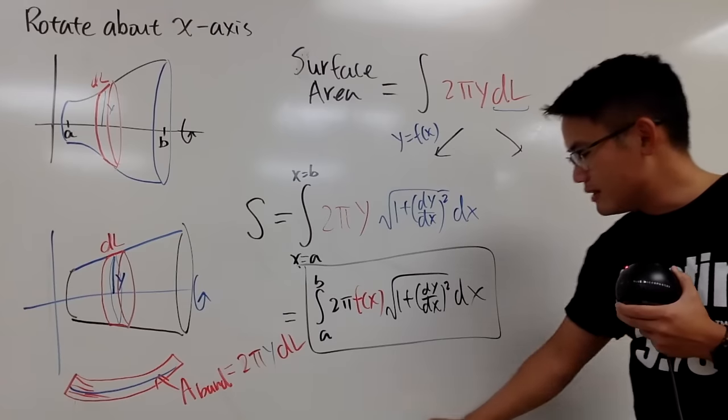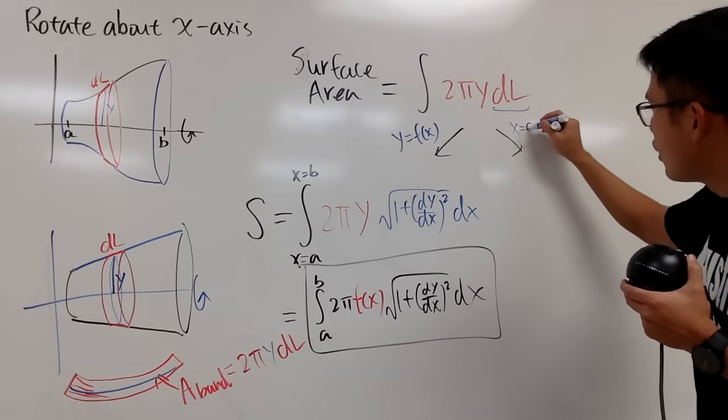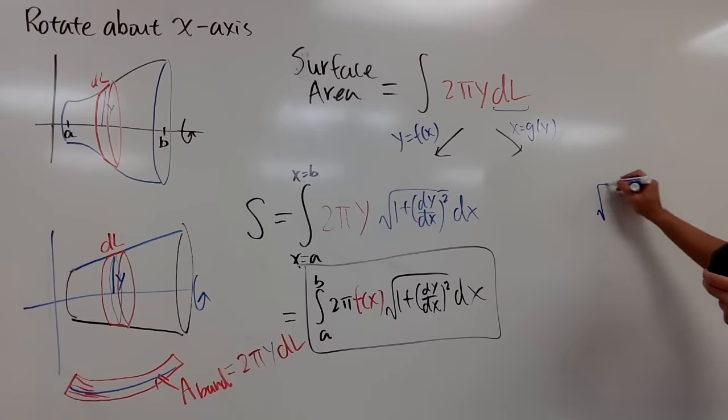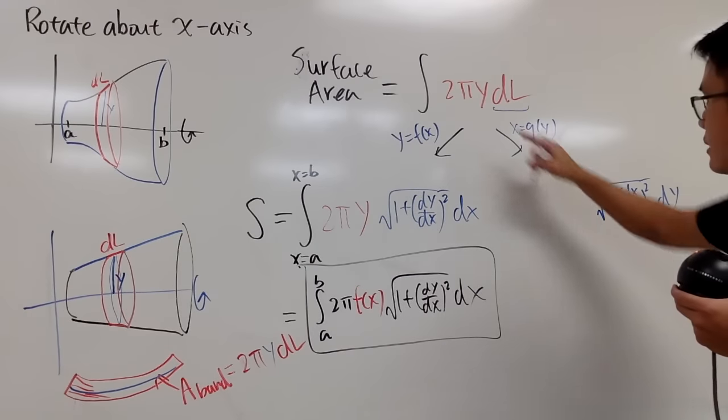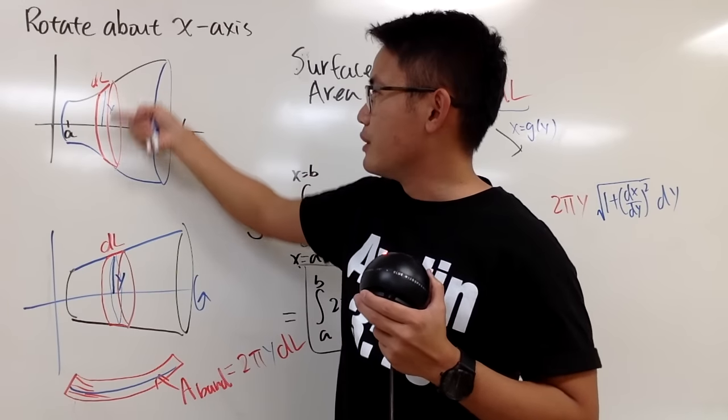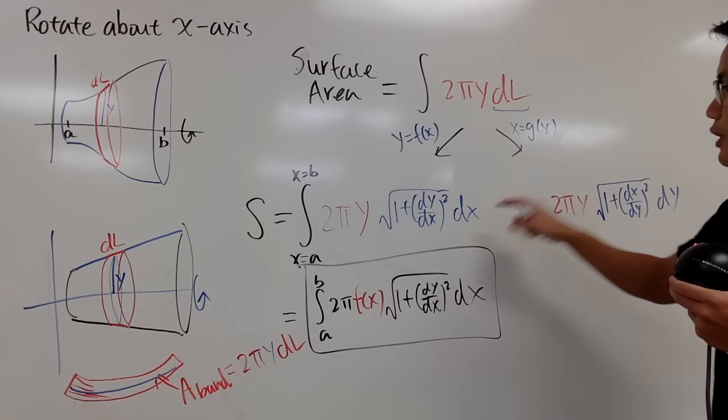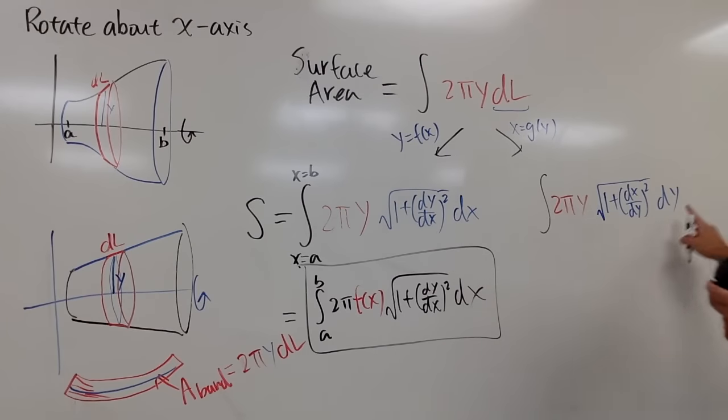Now suppose you have another situation, maybe this curve was defined as x being a function of y. In that case, for the dl, you do the other version, right? So what you do is you open the square root, and then you have 1 plus dx/dy, and then you square that, and then you have the dy right here. And then you still put down the 2πy. This doesn't change. And once again, this is the y, because you are talking about this as your radius, the vertical distance, and you take that, rotate. Okay? So this right here stays the same. You just look at the dl, it depends on the situation, you plug in different things.